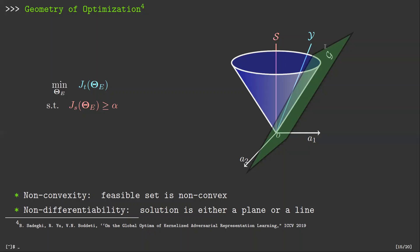This optimization problem is neither convex nor differentiable. The non-convexity arises from the fact that the feasible set is non-convex and the non-differentiability is due to the fact that the solution is either a two-dimensional plane or a one-dimensional line.